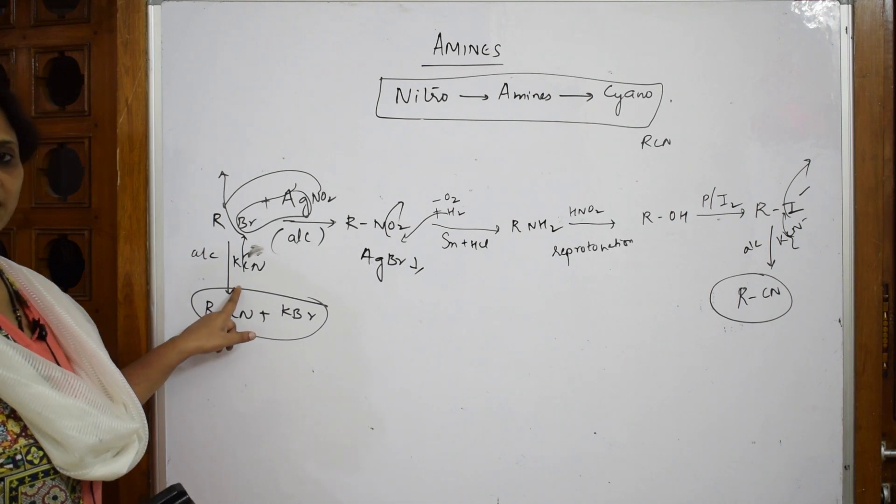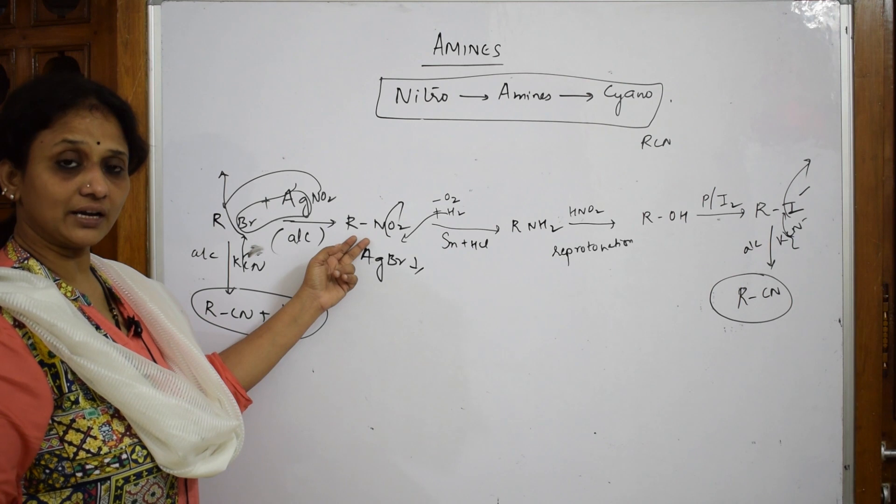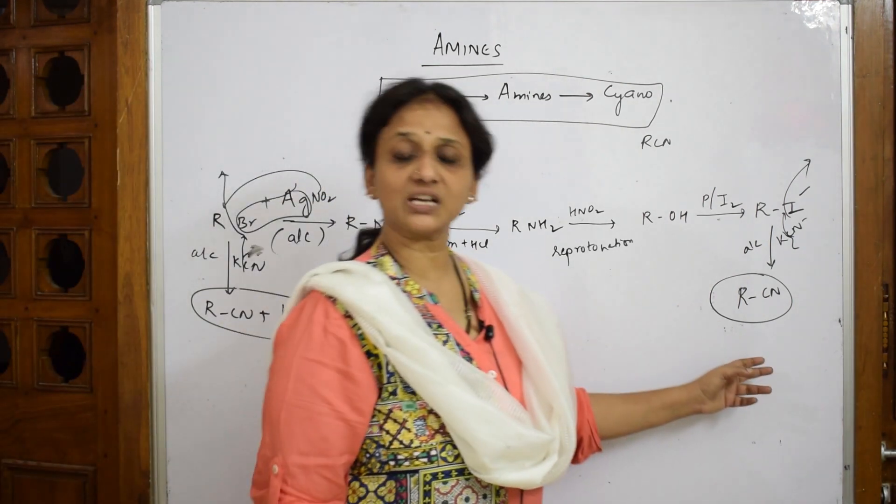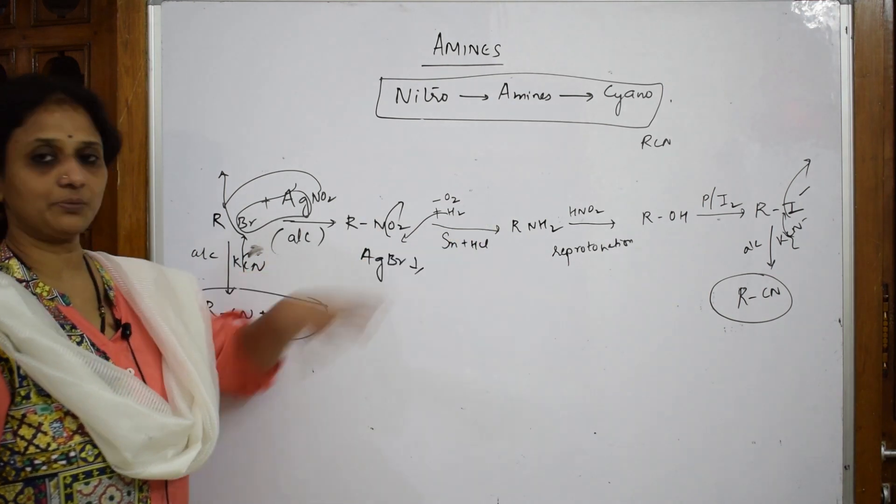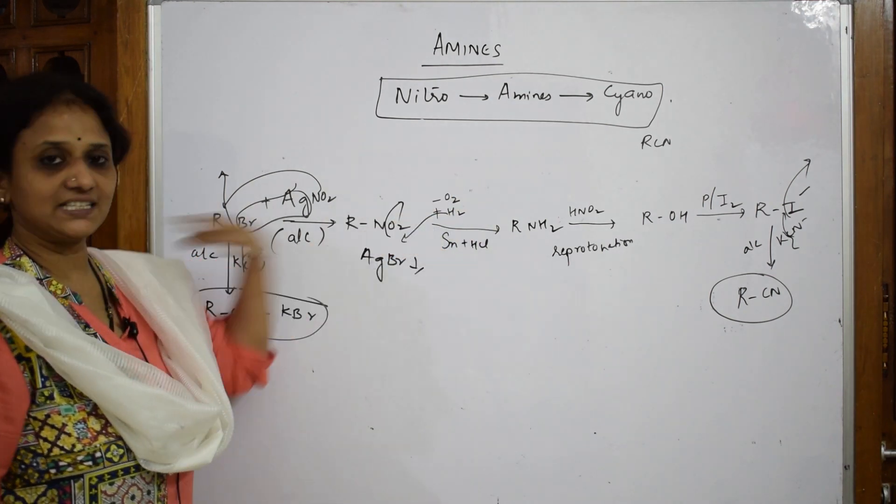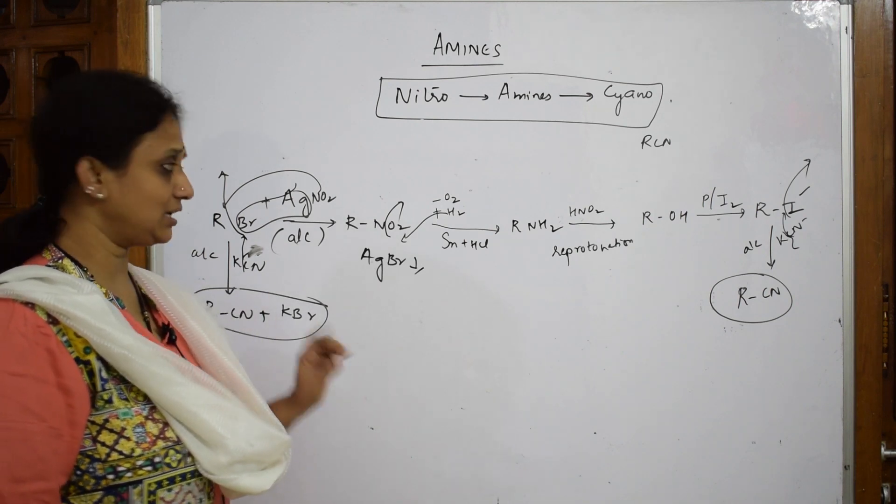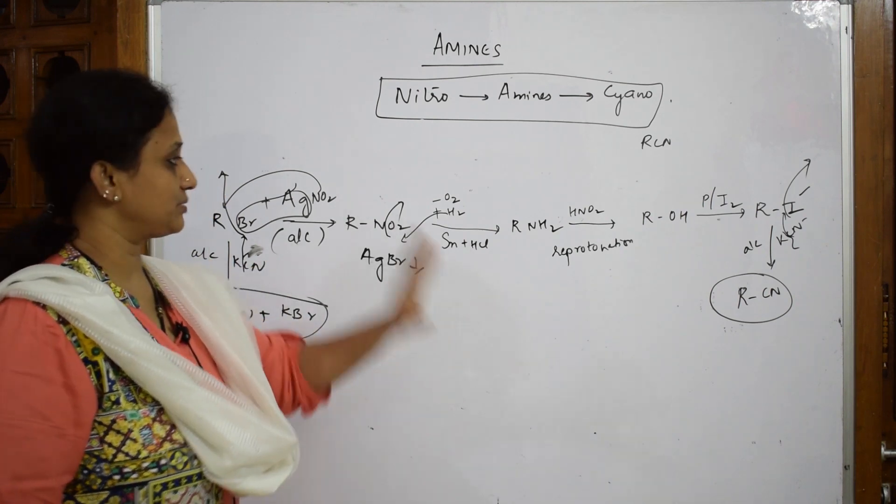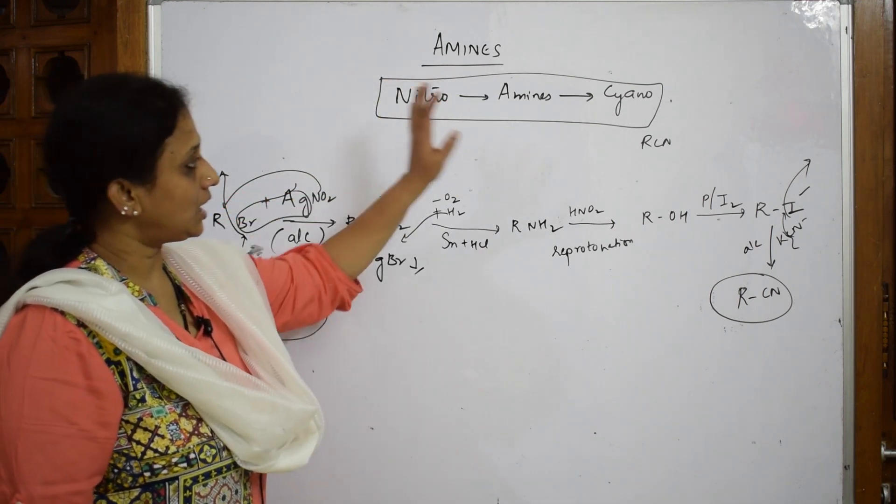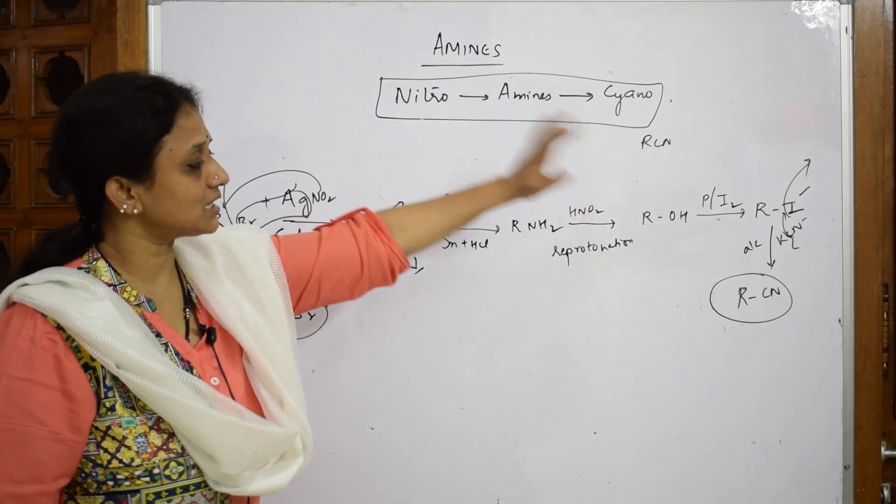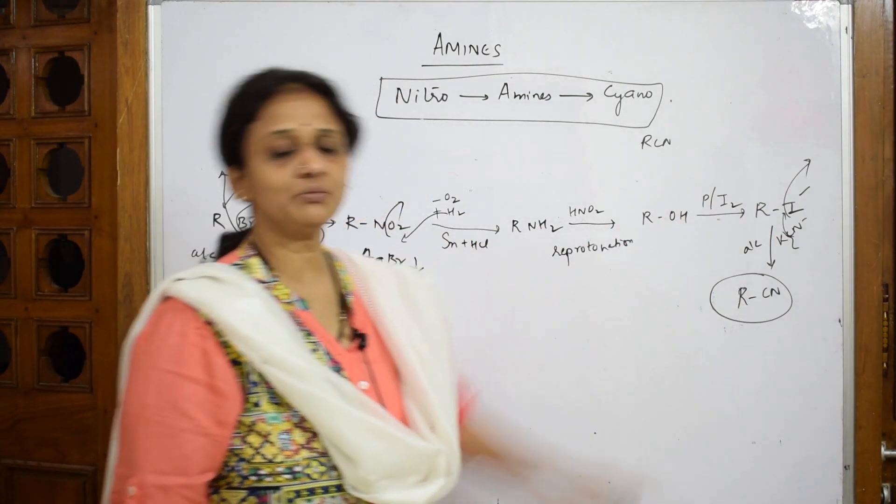Why am I teaching this? When they ask you to convert alkyl bromide to cyano compounds, this is one conversion. If they're asking you to convert nitro alkane to cyano alkane, this is one conversion. When you learn such types of things at a stretch, it's easy. Now what should you do? Please practice this, write in your books clearly, practice multiple times. Remember: nitro to amines, amines then can't directly be converted, you go to these steps, then finally cyano.